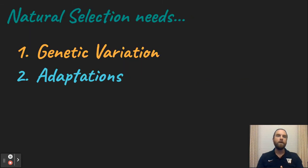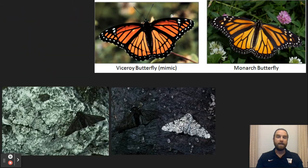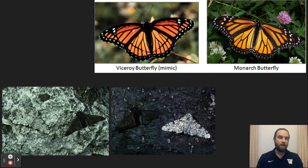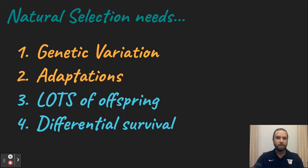Natural selection also needs adaptations, like butterflies that mimic a poisonous butterfly, or moths that are camouflaged so you cannot see them at all. Therefore, predators cannot see them and they survive longer to reproduce. Those are adaptations.